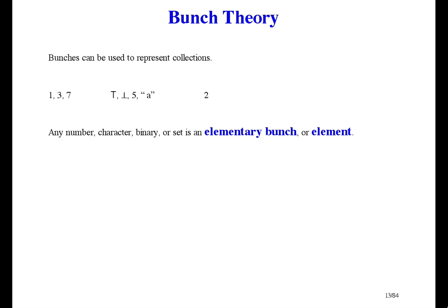Any number or binary value or character or set, which we'll get to later, is an elementary bunch or an element. That means the same thing as elementary bunch or a one element bunch. If you have two bunches and you put a comma between them, you have a bunch consisting of the elements of both bunches. The comma is the bunch union operator.